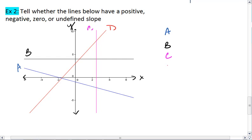So what we should see is starting with line A. The line continues with a negative slope. It's going downwards. So A has a negative slope.